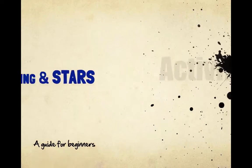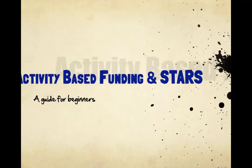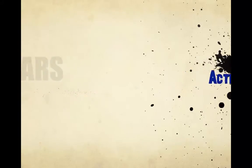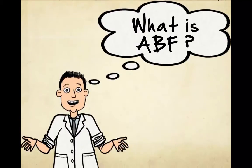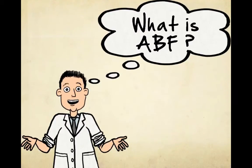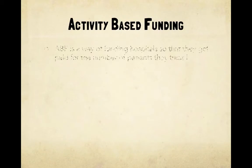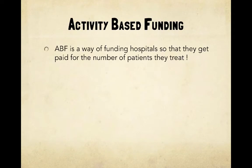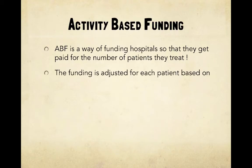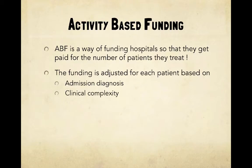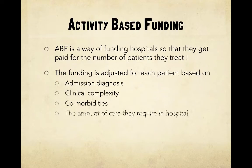Welcome to the Introduction Guide to Activity-Based Funding and STARS. ABF is a way of funding hospitals so they get paid for the number of patients they treat. The funding is adjusted for each patient based on admission diagnosis, clinical complexity, comorbidities, and the amount of care they require in hospital.